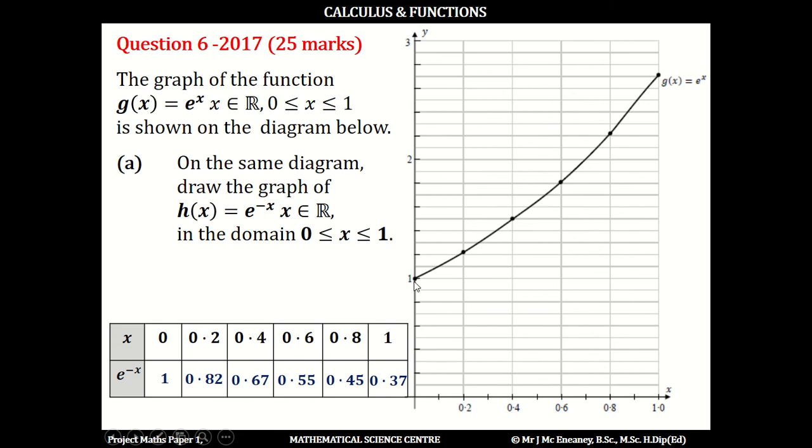When x = 0, y = 1, that's the first coordinate. When x = 0.2, y goes up to 0.82. When x = 0.4, y goes up to 0.67. Next, at 0.6 goes up to 0.55, 0.8 goes up to 0.45, and finally 1 goes up to 0.37.